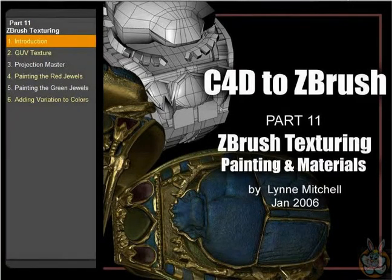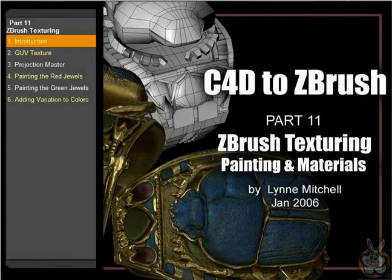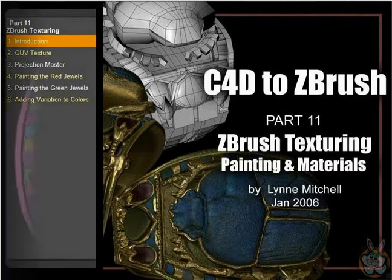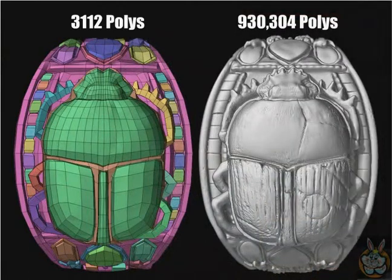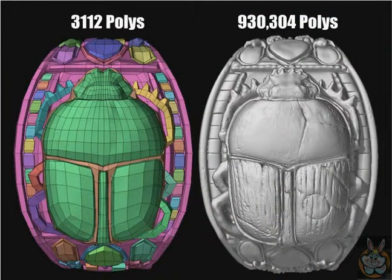Part 11, we're going to finally texture, use Projection Master, and work on the jewels. Here are some renders. We started out with 3,000 polys and went almost to a million.